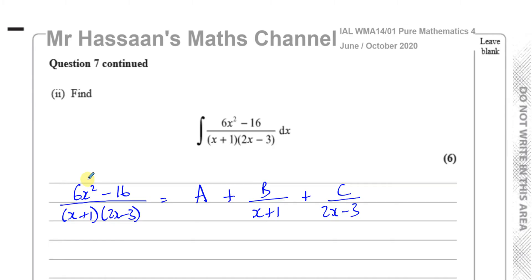If the difference between the orders was 1 — for example, if the numerator was a cubic and the denominator a quadratic — then you'd have Ax + B as your whole number part, and then C over (x+1) plus D over (2x−3). The difference between the orders determines what the whole number part will be: if it's the same order, it's a constant; if the difference is 1, it's linear (Ax + B); if the difference is 2, it's quadratic (Ax² + Bx + C).